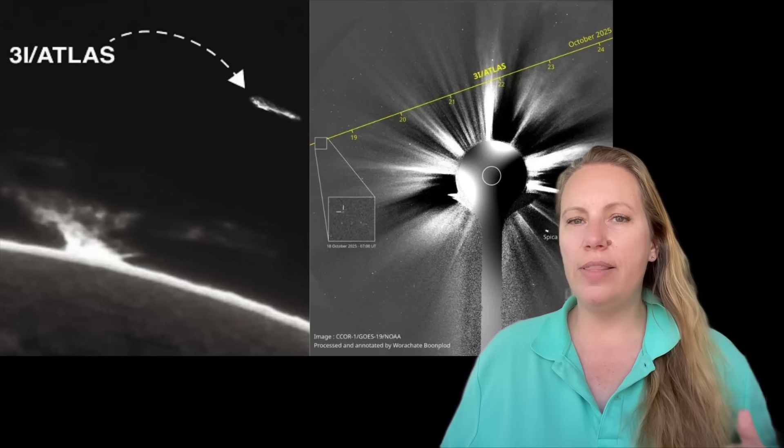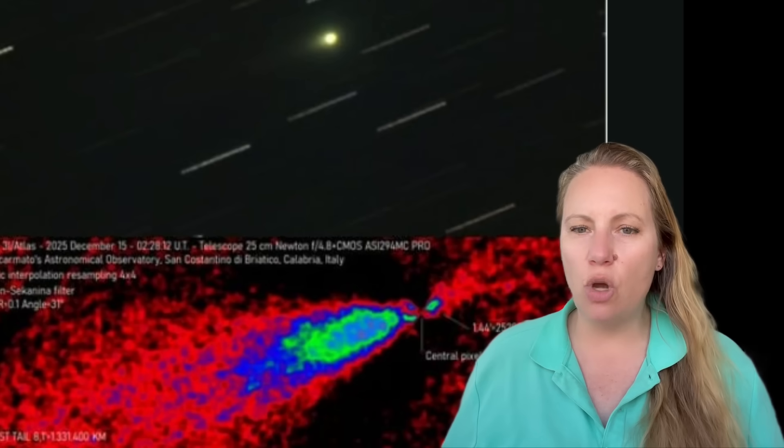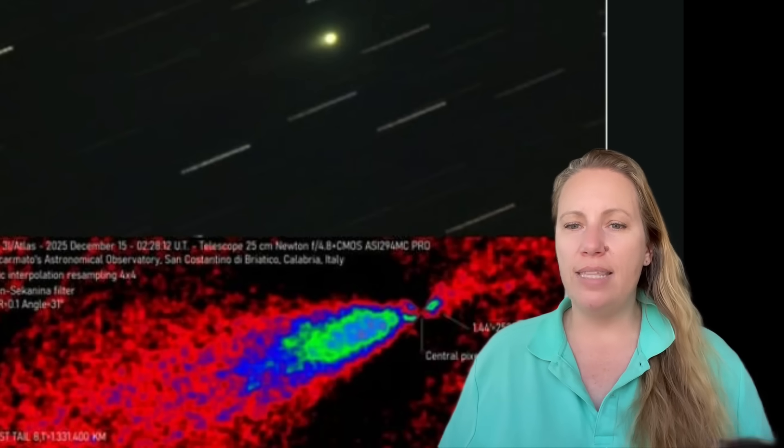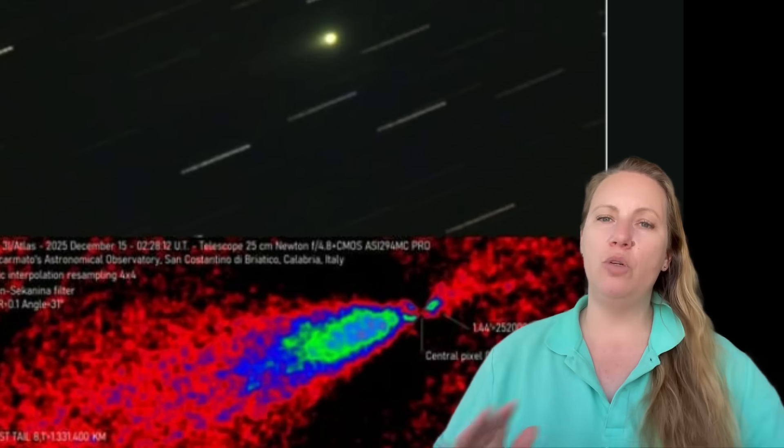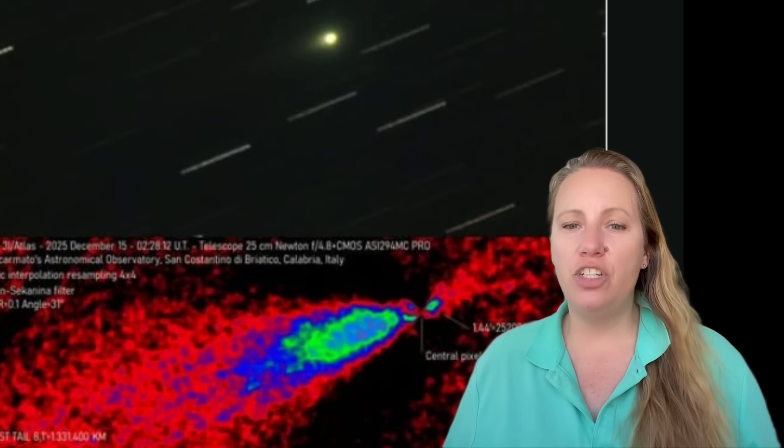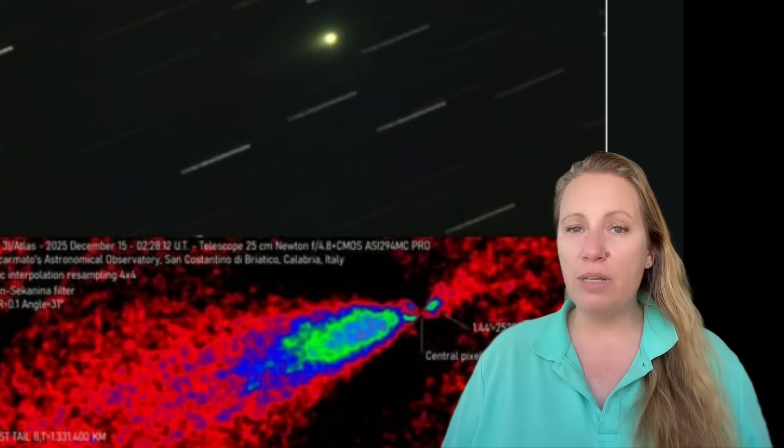So what are the new images actually showing? As 3i Atlas moved closer to Earth, the angle from which we are observing it, and all the hobby astronomers are observing it, has changed. And that matters a lot because space is three-dimensional. Do not forget that. But when we're taking these images and we look at these images, they flatten everything into two dimensions.